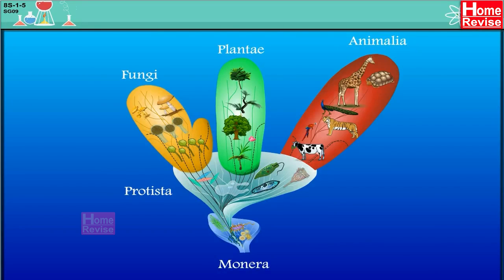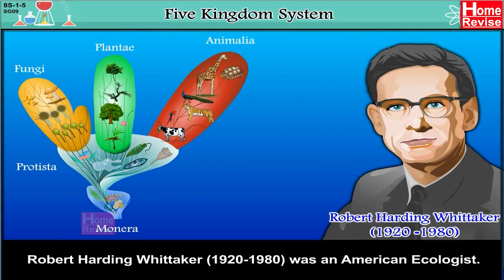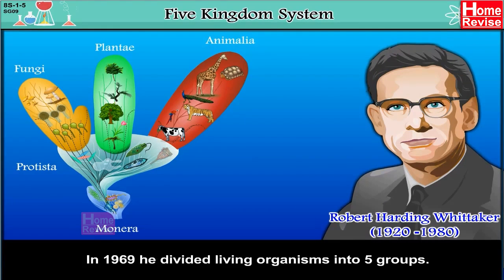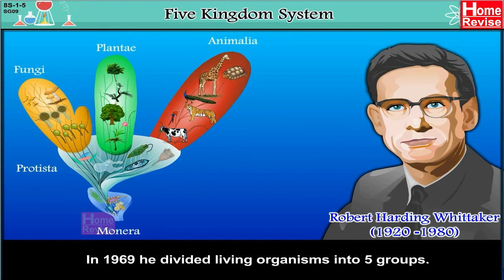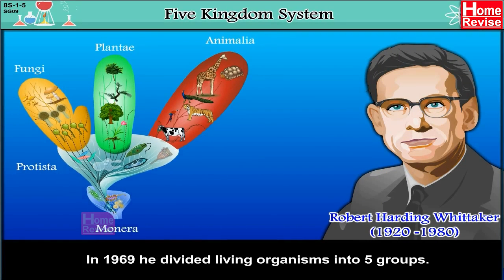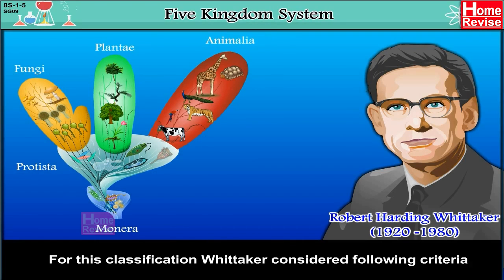Five Kingdoms System. Robert Harding Whitaker (1920–1980) was an American ecologist. In 1969, he divided living organisms into five groups. For this classification, Whitaker considered the following criteria.